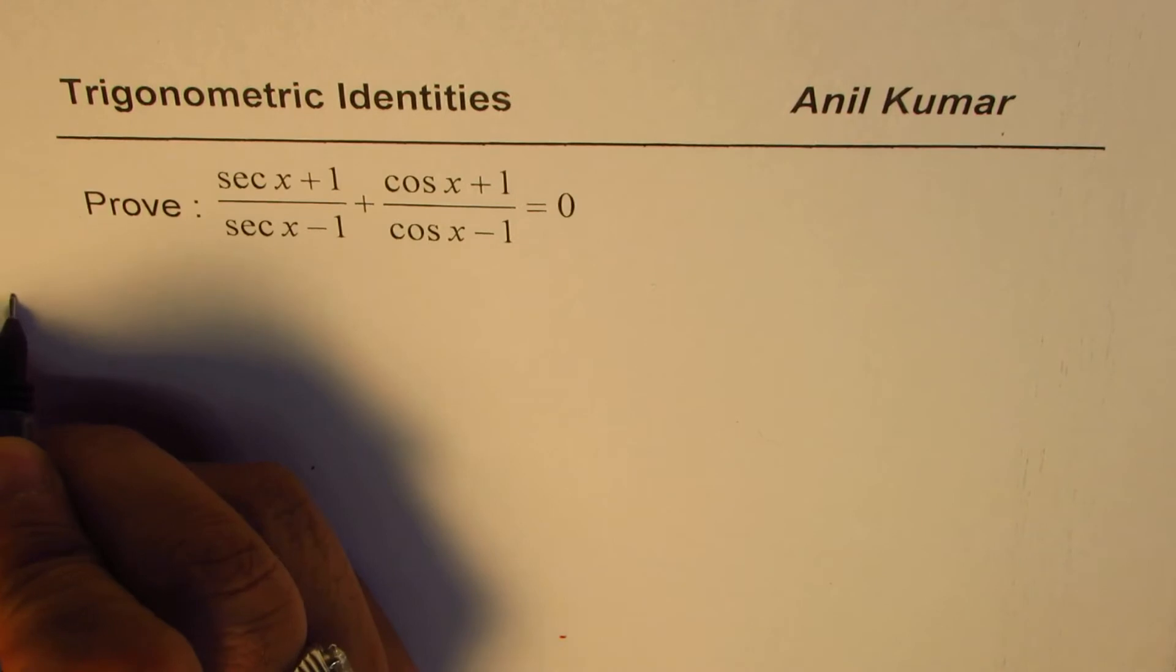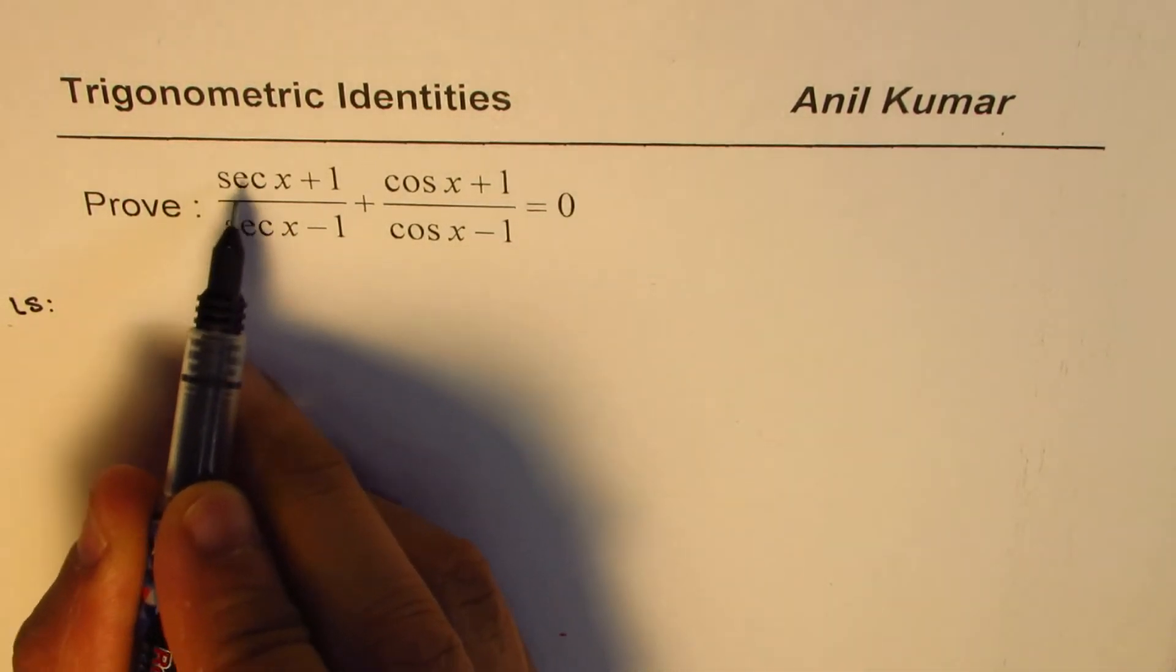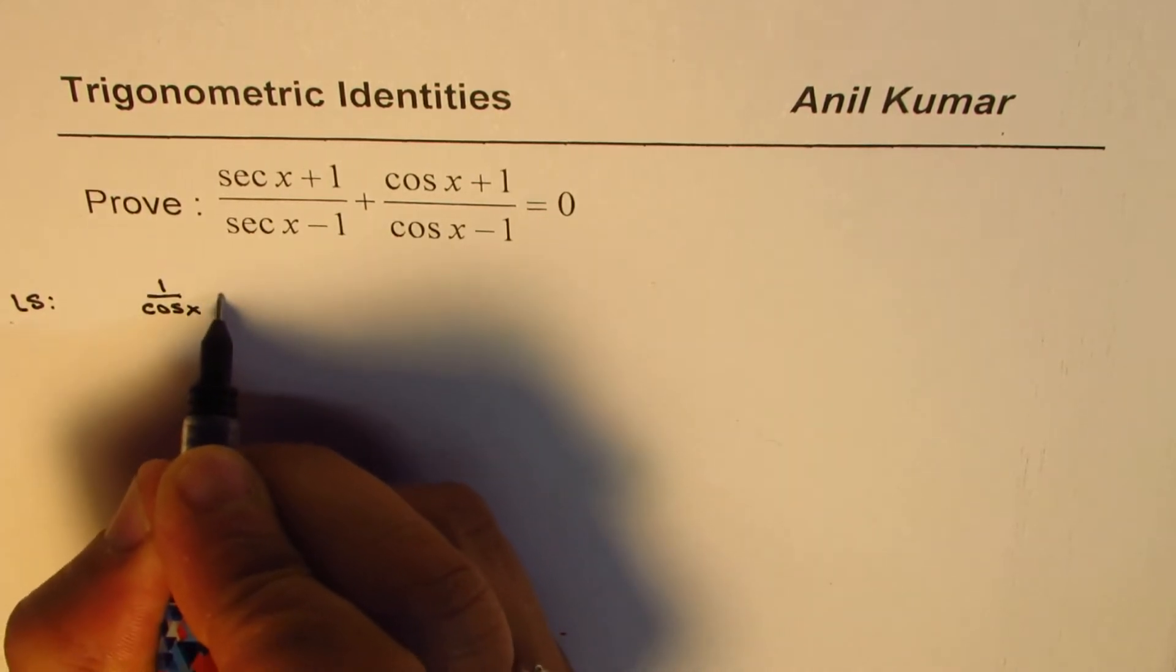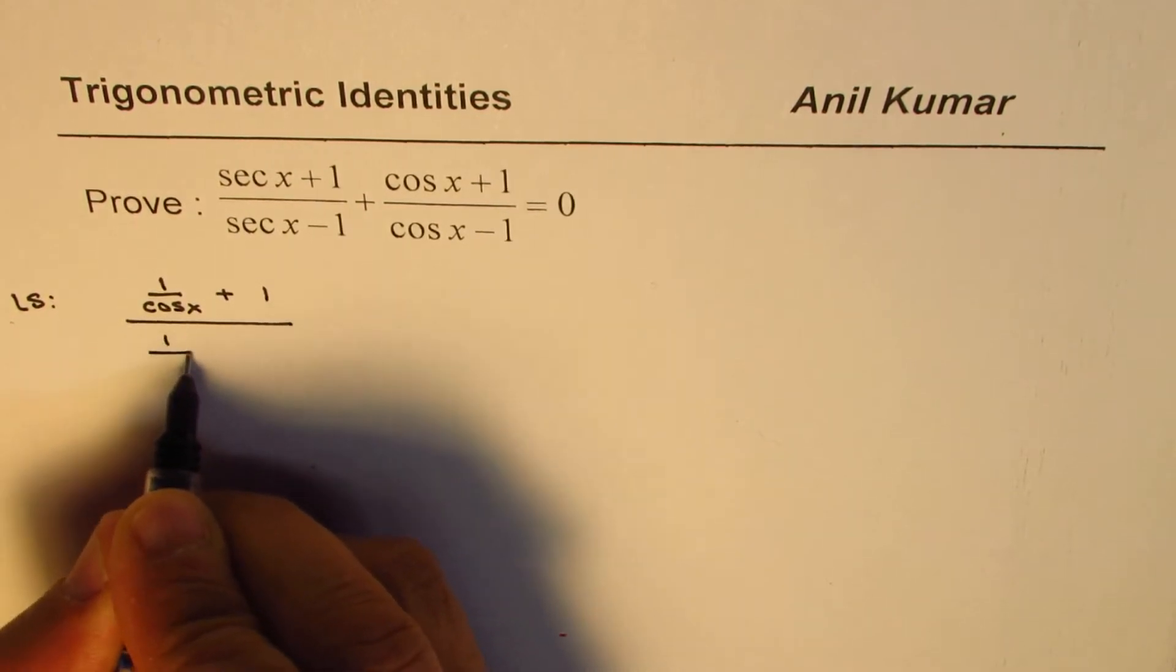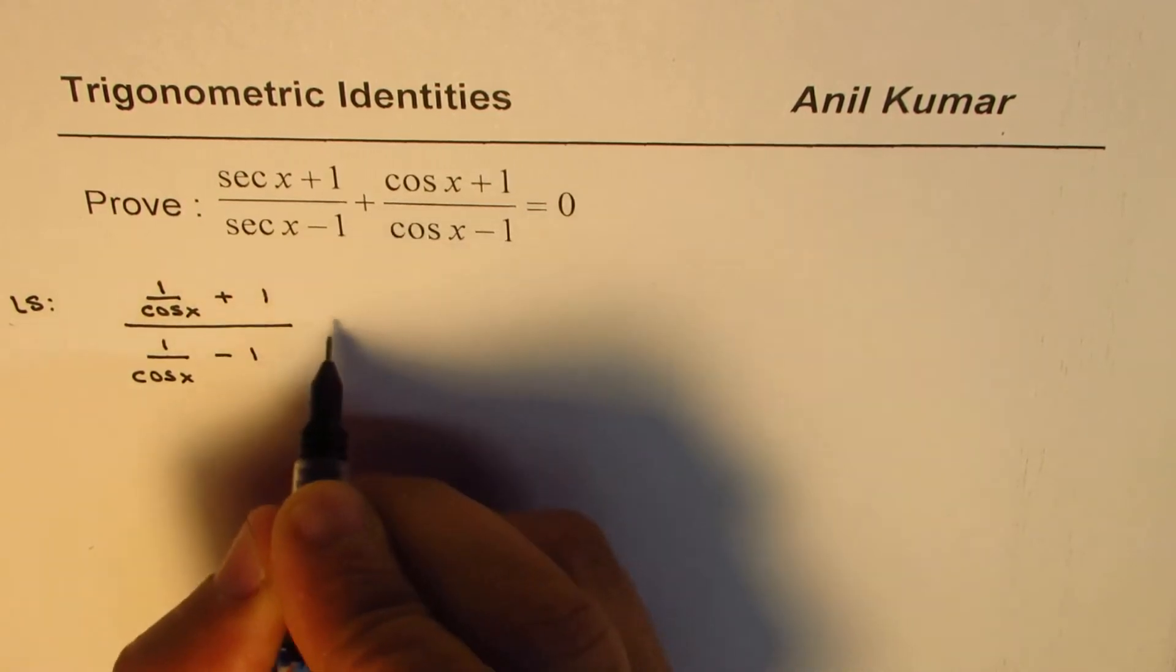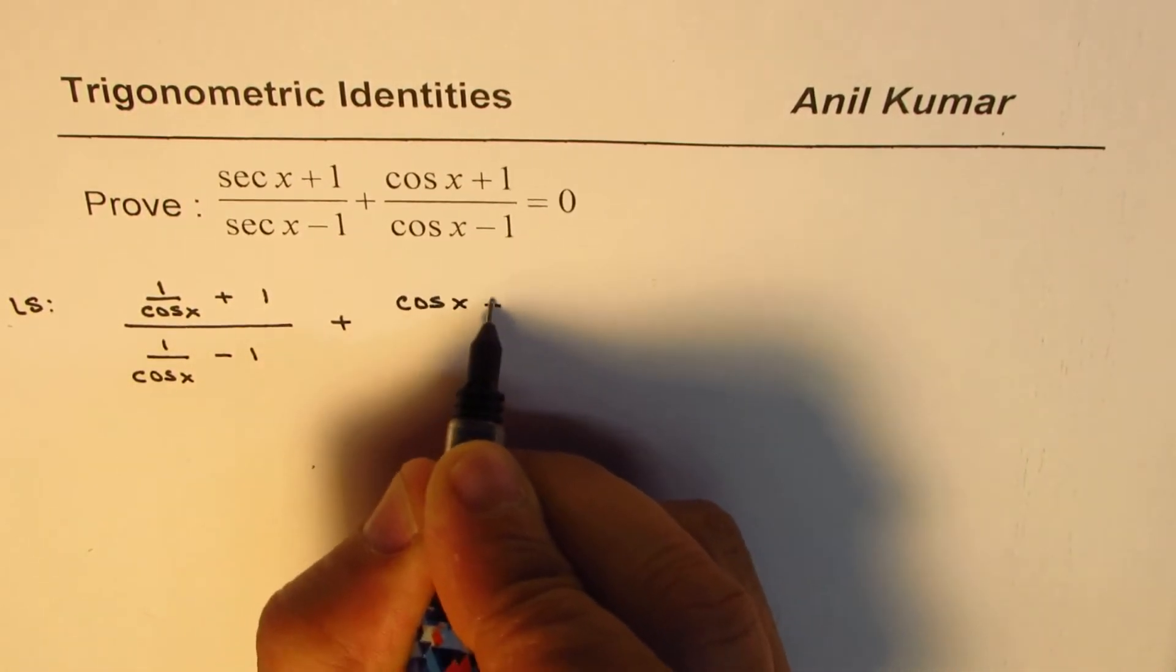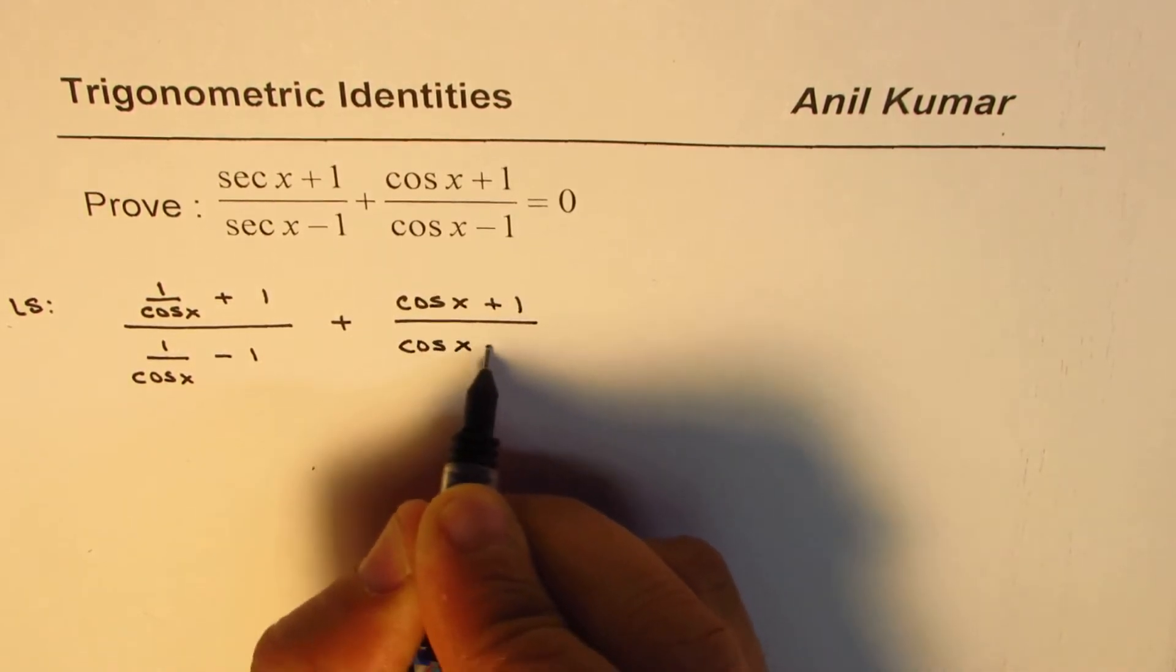We can write the left side as, instead of sec x, 1 over cos x. So (1/cos x + 1) divided by (1/cos x - 1). And the second term we'll keep as such, which is (cos x + 1)/(cos x - 1).